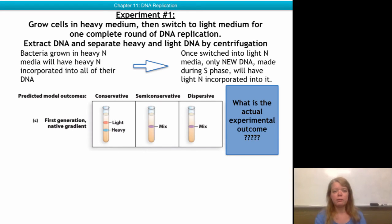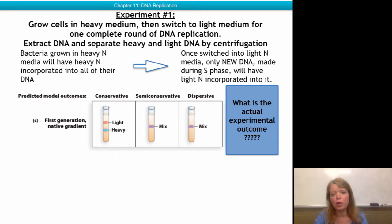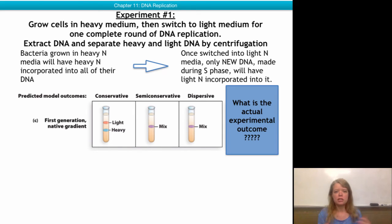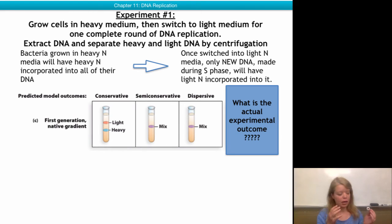The experiment that Meselson and Stahl did was to grow cells in heavy medium and then switch to light medium for one complete round of DNA replication. They first made the heavy blue cells, then gave the cells one round of replication to make the light red cells, and then tried to see what they observed and which of the models that they were testing would be able to predict this outcome.